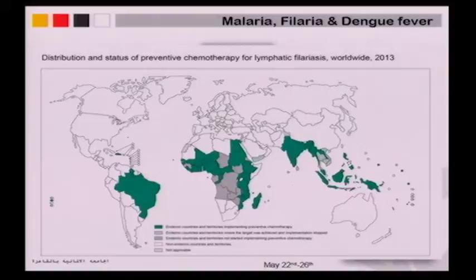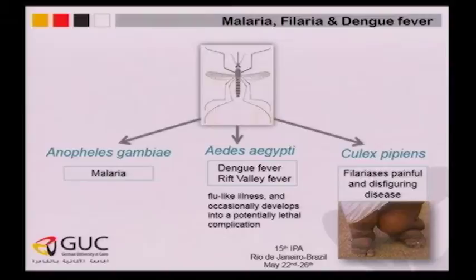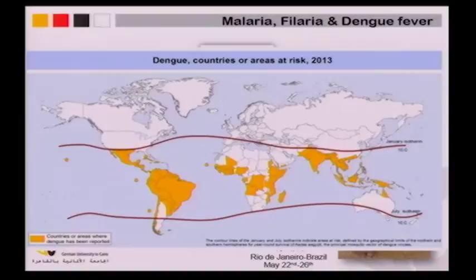Aedes aegypti is responsible for dengue fever and rift valley fever. This disease presents as a flu-like illness and occasionally develops into potentially lethal complications. Looking at its worldwide distribution, you find it more or less in Latin America, Africa, India, and Far East countries.